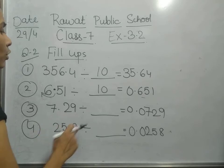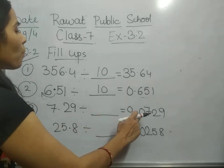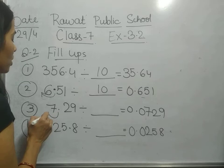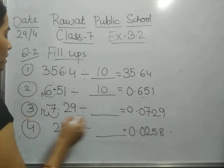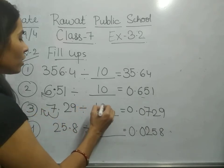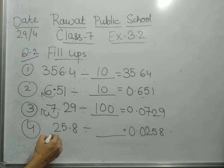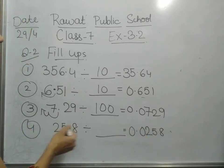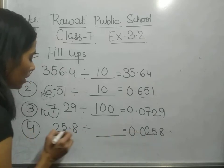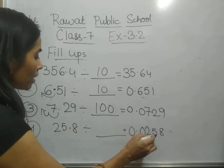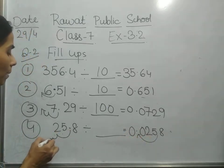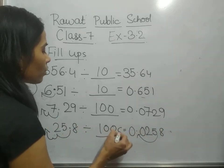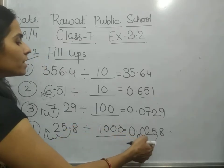Now 7.29 should be divided by which number to get 0.0729. The decimal has shifted 2 positions to the left, so we divide by 100. Next, 25.8 should be divided by which number to get 0.0258. The decimal has shifted 3 positions to the left, so we divide by 1000.